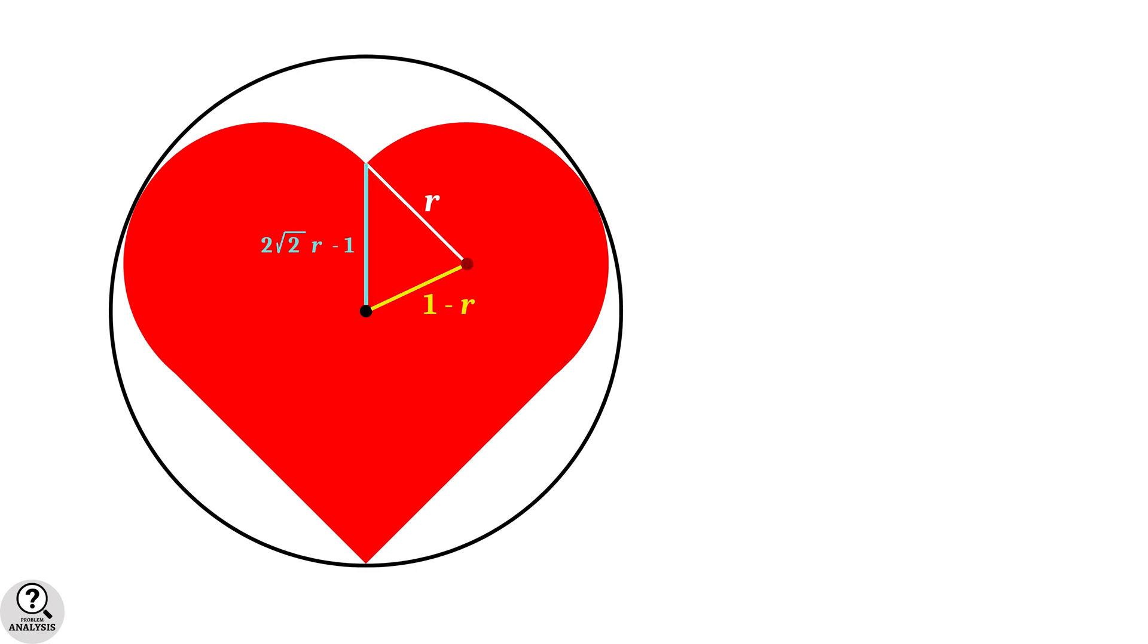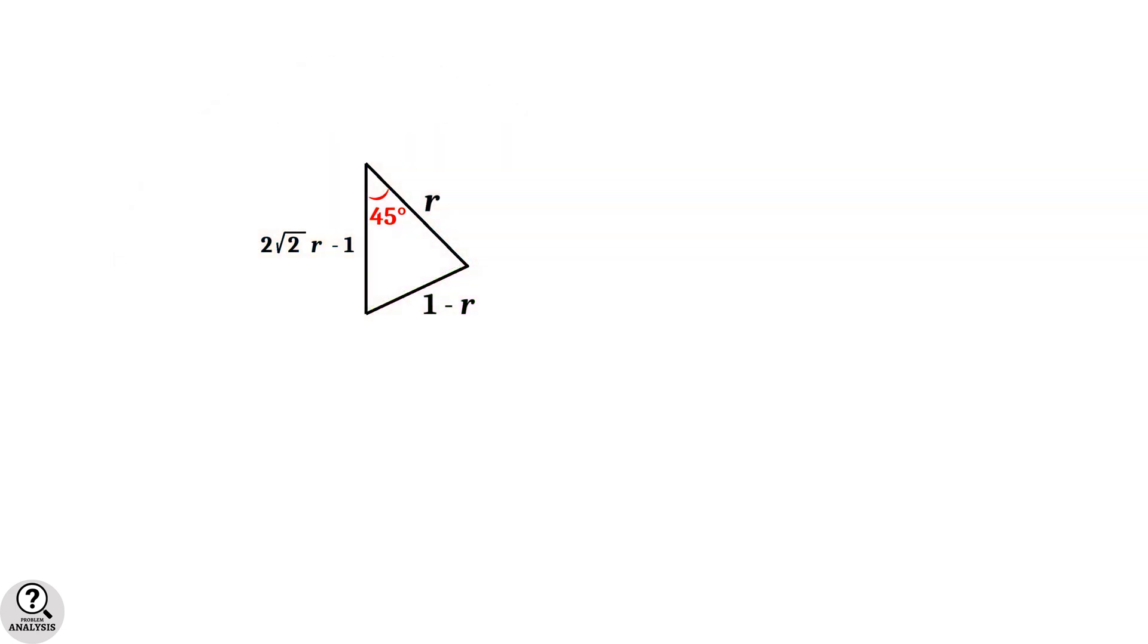Now in this figure, we got a triangle with side lengths in terms of r. Consider this top angle. Comparing with the square, we can see that this angle is made by the diagonal of the square. So it is 45 degrees. Now come back to the diagram, and consider this triangle alone.